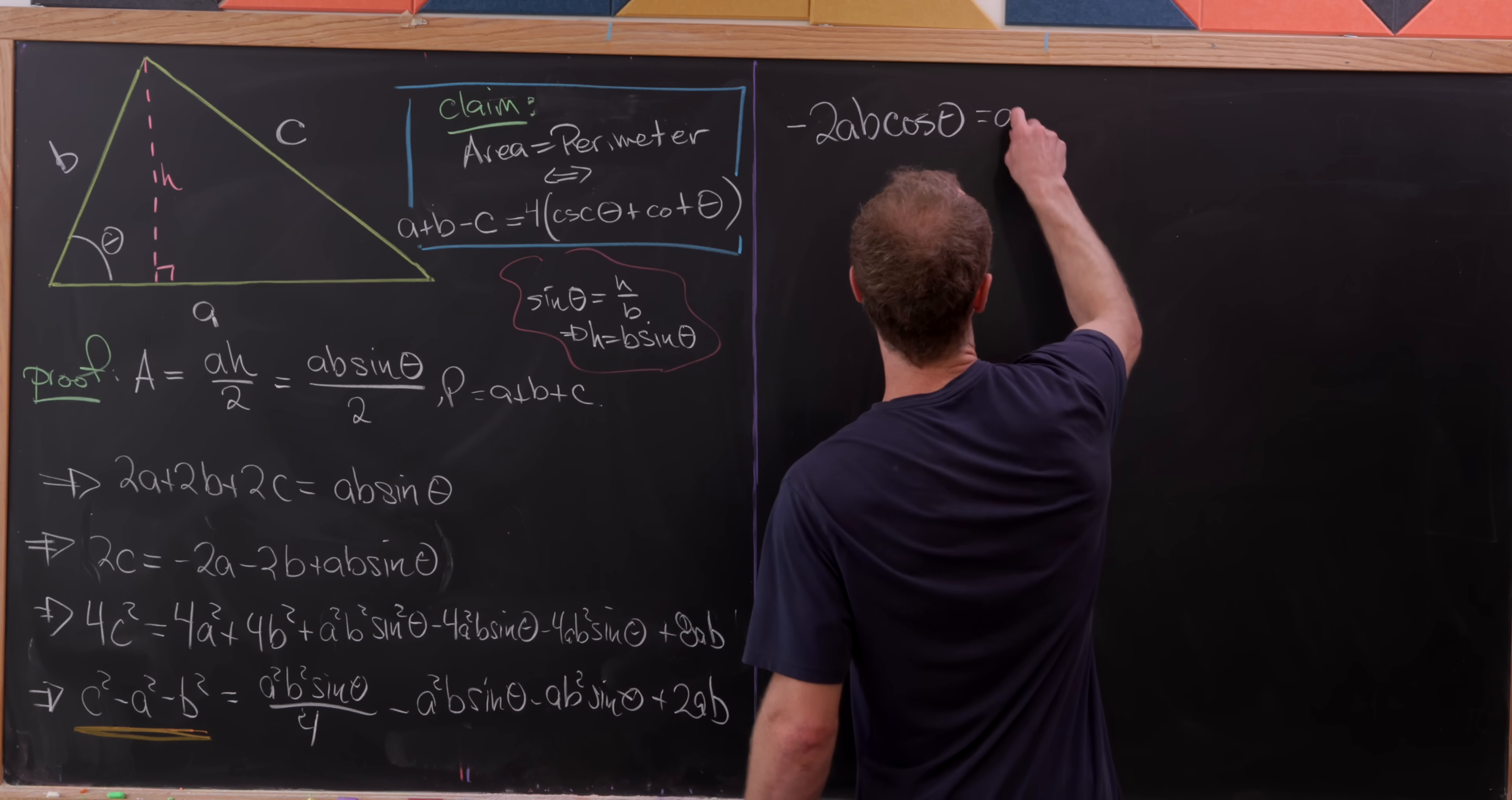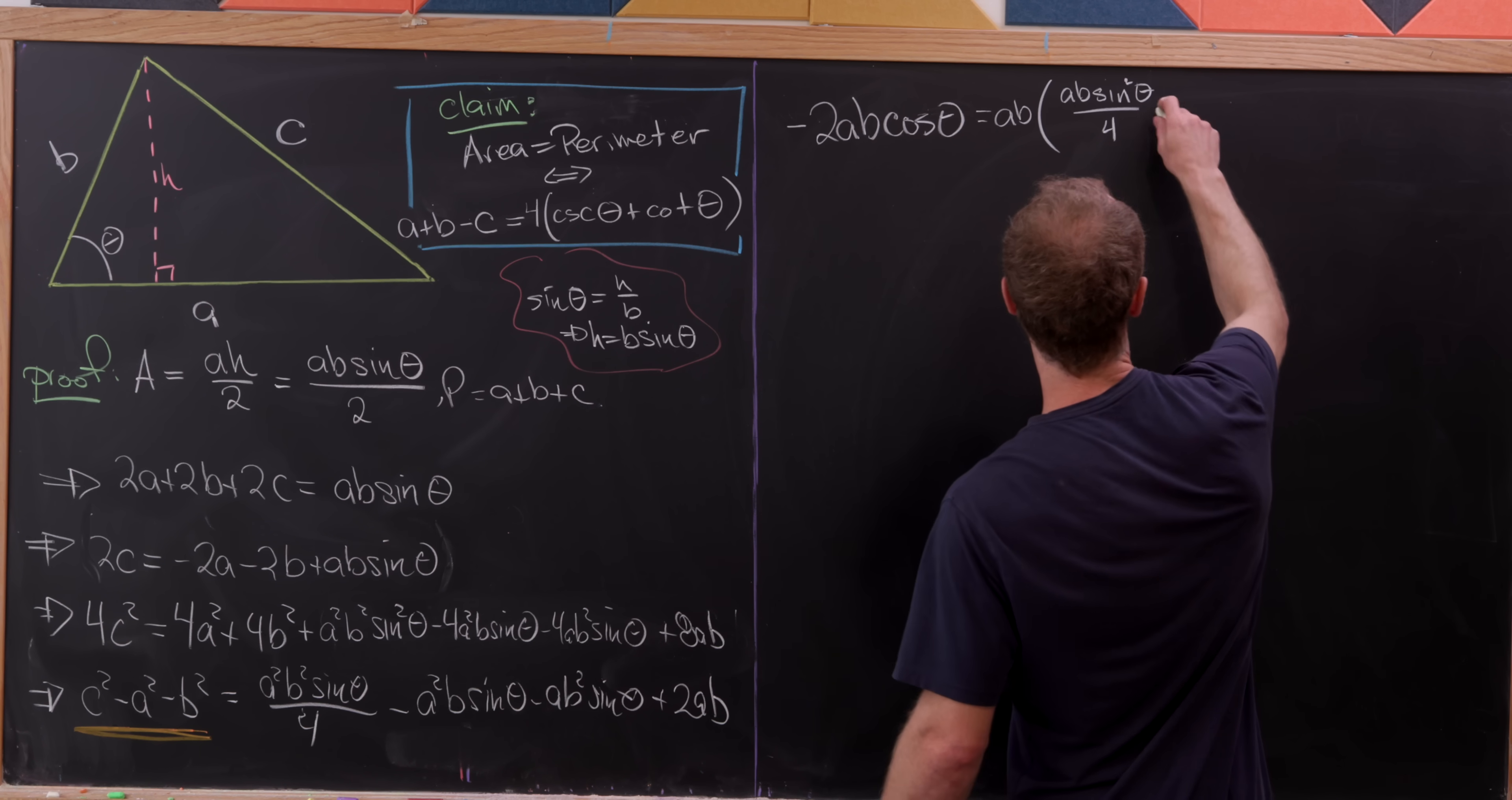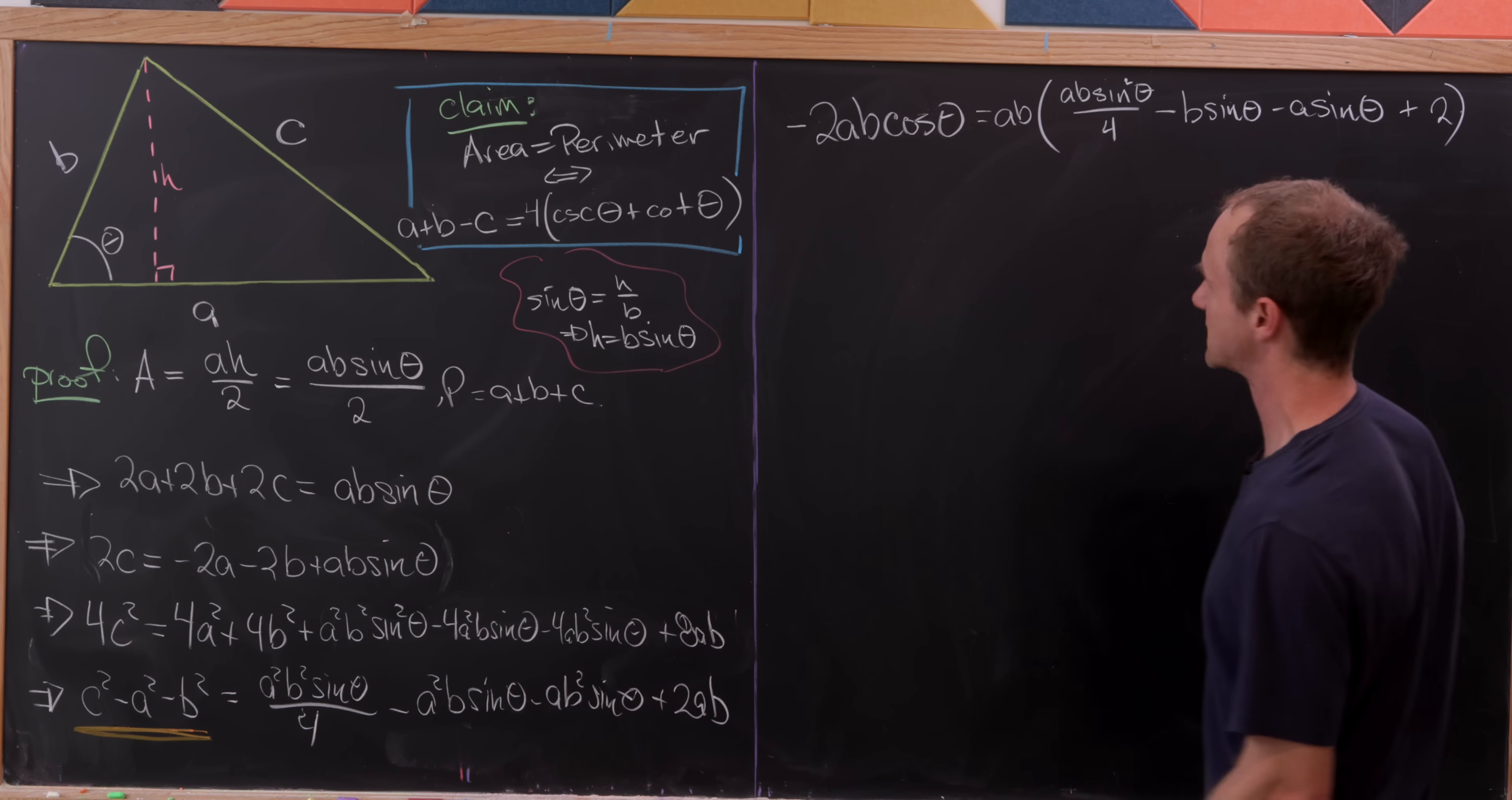So if I do that, I'll have an a times b out in front of the whole thing. And then I'll be left with a times b times sine squared theta all over 4, and then minus b times sine theta minus a times sine of theta. And then finally, plus two, because we factored this a times b out.